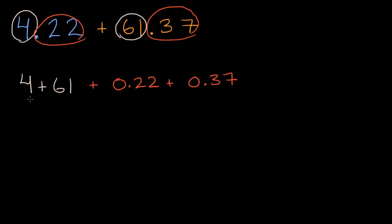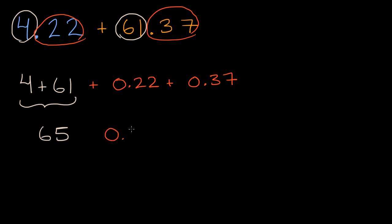Four plus 61 is going to be equal to 65. And then 22 hundredths plus 37 hundredths — what's 22 plus 37? Well, 20 plus 30 is 50, and two plus seven is nine, so it's going to be 59 hundredths. So the answer is 65 and 59 hundredths, which we can write as 65.59.